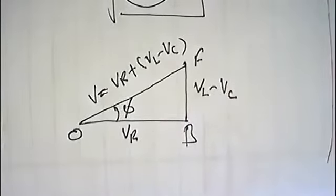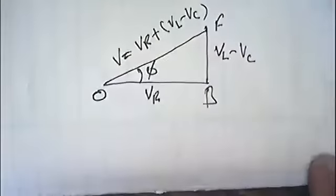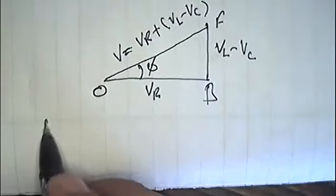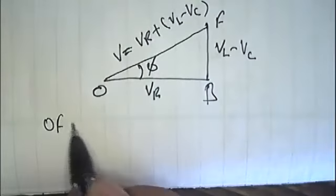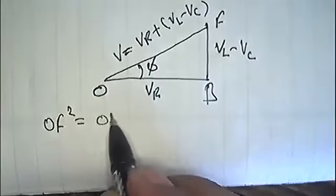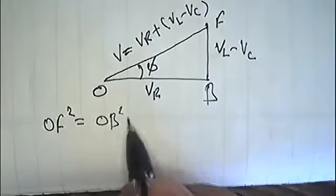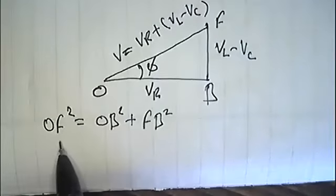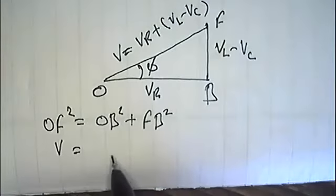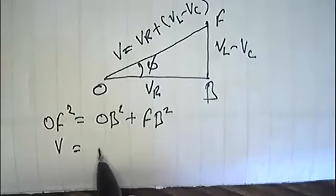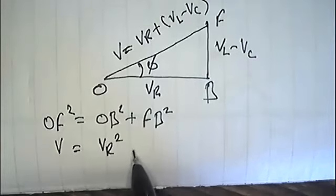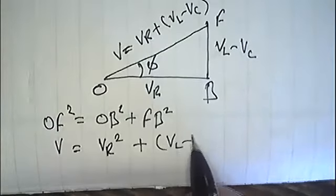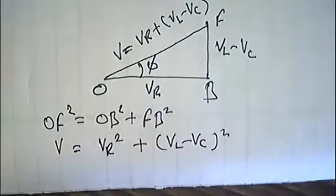By Pythagoras theorem in this triangle, OF squared equals OB squared plus FB squared. OF is the resultant voltage V, OB is VR squared, and FB is VL minus VC whole squared.